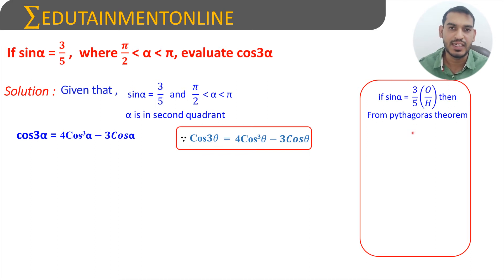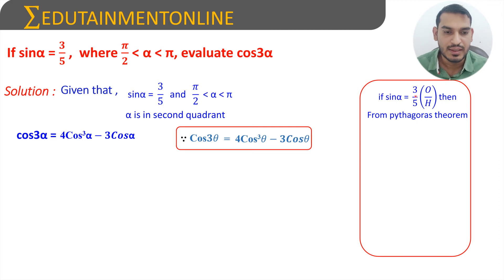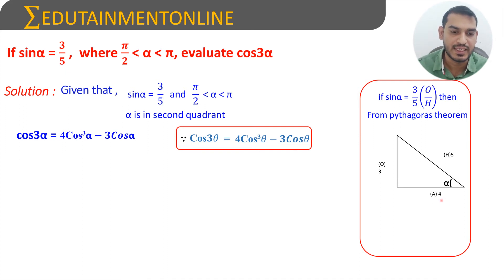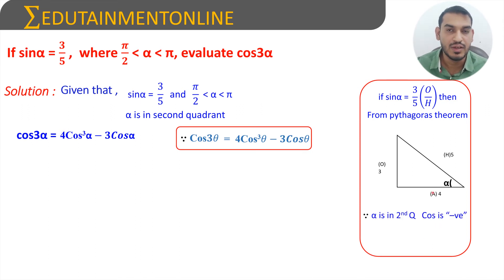Given that sin α equals 3/5, we know that sin θ equals opposite side by hypotenuse, which means 3 is the opposite side and 5 is the hypotenuse. To find the third side we use the Pythagorean theorem: 5² minus 3² equals 4², therefore the adjacent side is 4. So cos α equals adjacent side by hypotenuse which is 4/5, but since α is in the second quadrant, it will be minus 4/5.